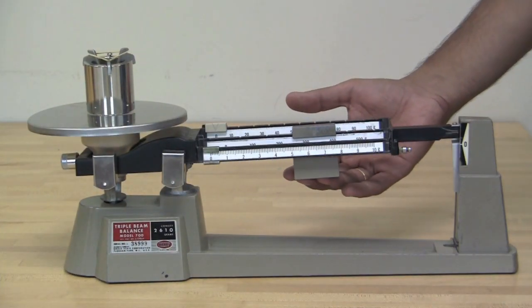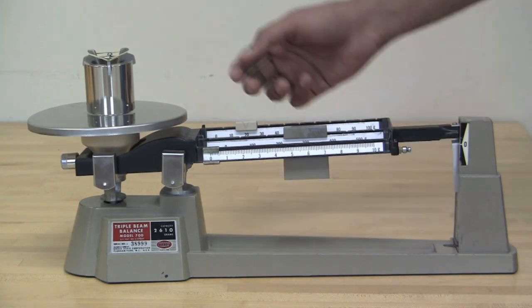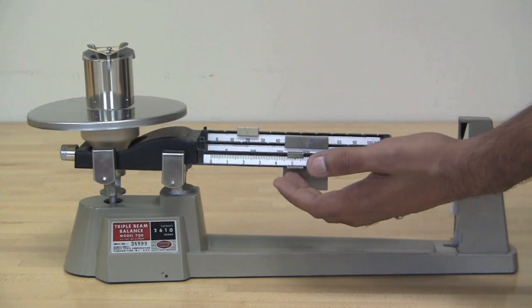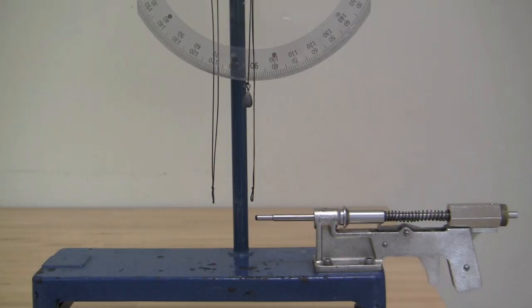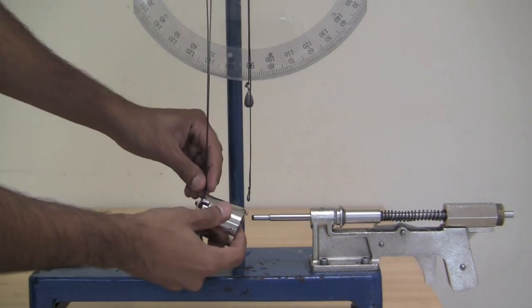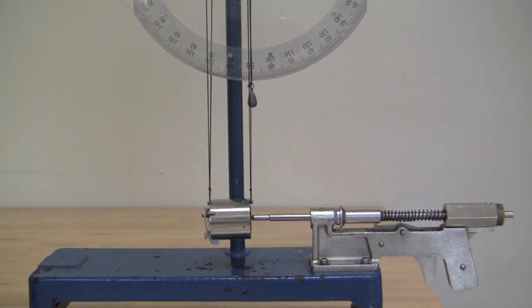To start the experiment, find the mass of the catcher and the ball using the triple beam balance. Attach the catcher by hanging it from the threads on the two screws on either side.